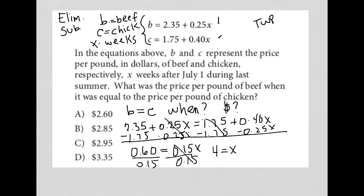So the price of beef and the price of chicken are equal to each other at 4 weeks after July 1st. Even if you didn't catch that you were not just solving for x by reading the question, you'd see that 4 is not even a possible answer here, so you need to go back and make sure you understand what's really being asked.